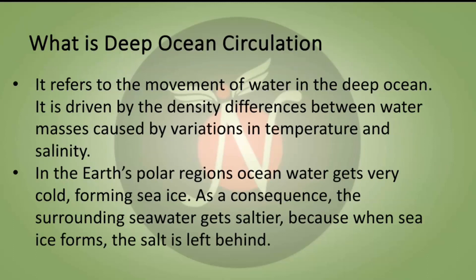What does deep ocean circulation really mean? It refers to the movement of water in the deep ocean. It is driven by density differences between water masses, caused by variations in temperature and salinity. In the Earth's polar regions, ocean waters get very cold, forming sea ice. As a consequence, the surrounding sea waters get saltier because when sea ice forms, the salt is left behind in the sea.